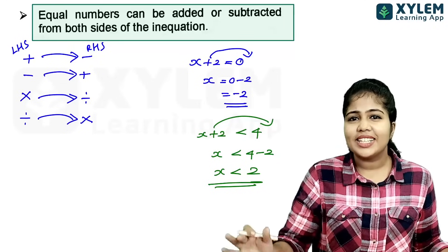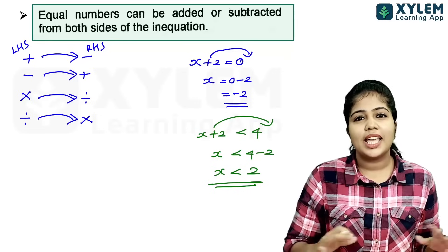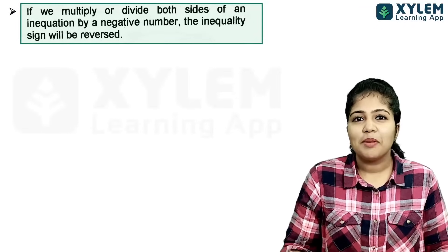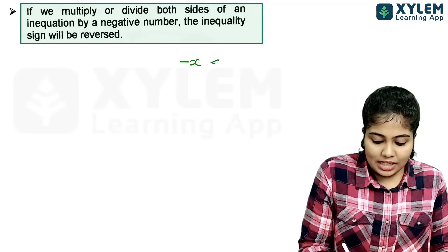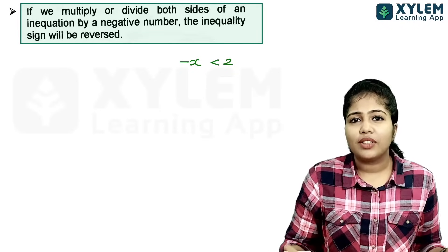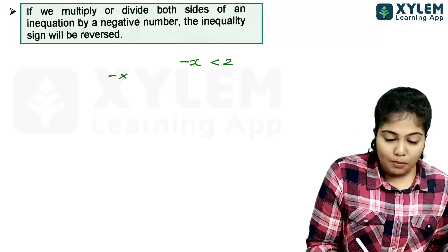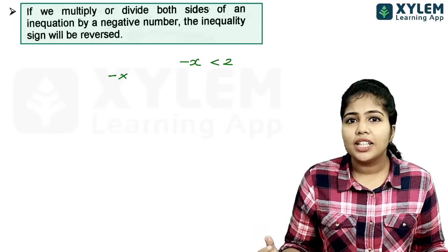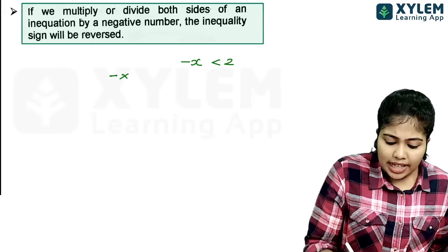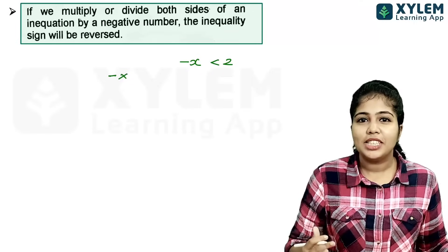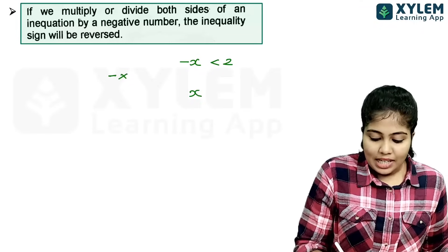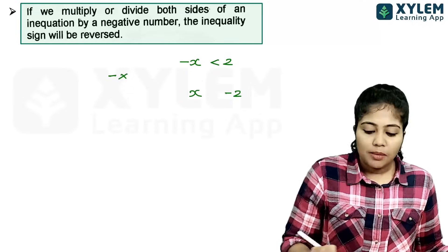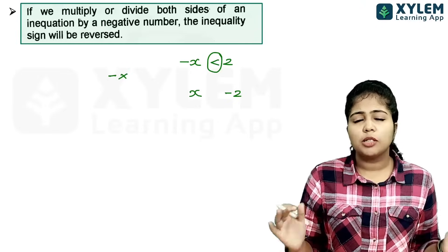We are going to work on the left hand side and right hand side — plus, minus. It is the same concept. All operations work the same. Now, if minus x is less than 2, we multiply both sides by negative. When you multiply by negative in an inequality, it reverses. That means if minus x becomes plus x, the inequality flips. If we multiply by minus 1, we reverse the sign.